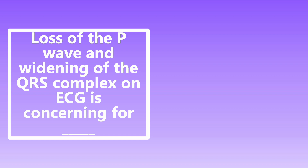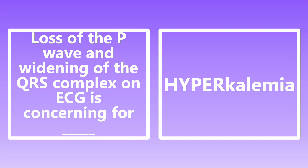Loss of the P wave and widening of the QRS complex on ECG is concerning for hyperkalemia. Very important — especially in emergency medicine. Loss of the P wave, widening of the QRS complex, and peaked T waves are all signs concerning for hyperkalemia. If you see this on an EKG, especially in a dialysis patient, you need to check that potassium level.